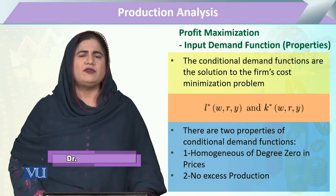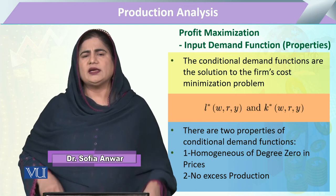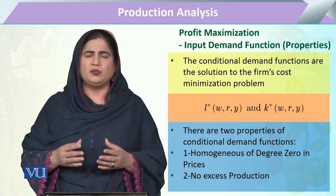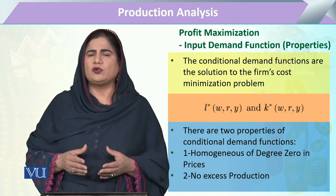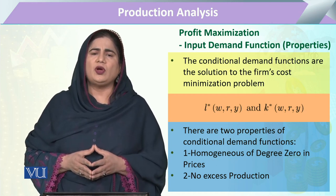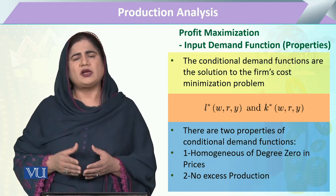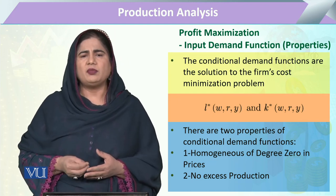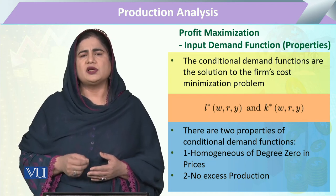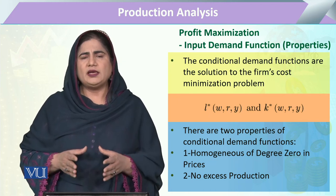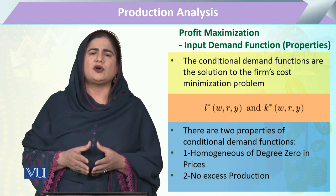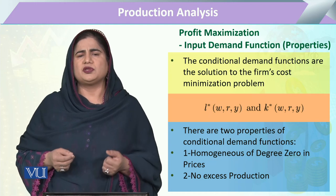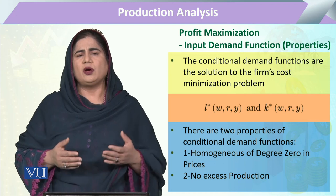For profit maximization, we have derived a demand function. From the conditional demand function for inputs, we can determine the amounts of inputs that are particularly required to produce that level of output sufficient to achieve maximum revenue — the point where marginal revenue equals marginal cost and the firm is optimally producing. There are some assumptions or properties of the derived demand function which must be fulfilled, otherwise the revenue function or input demand function will not yield our desired results.